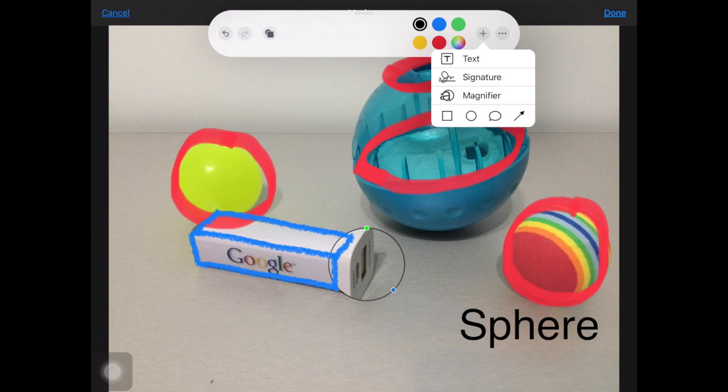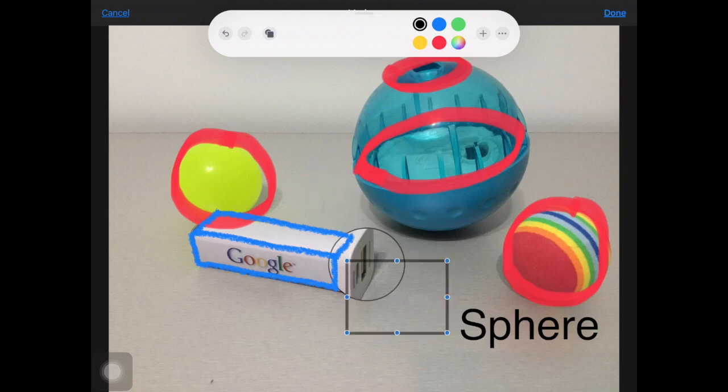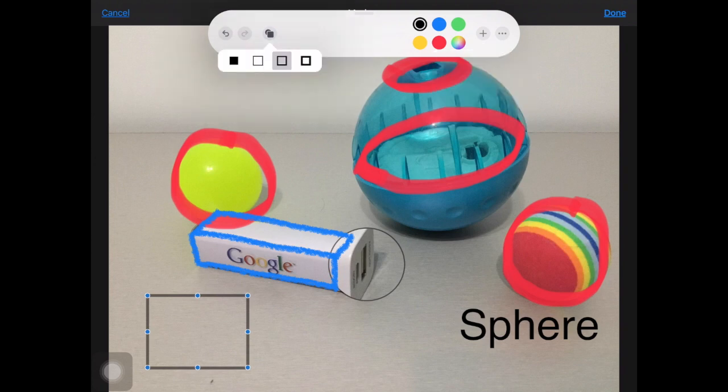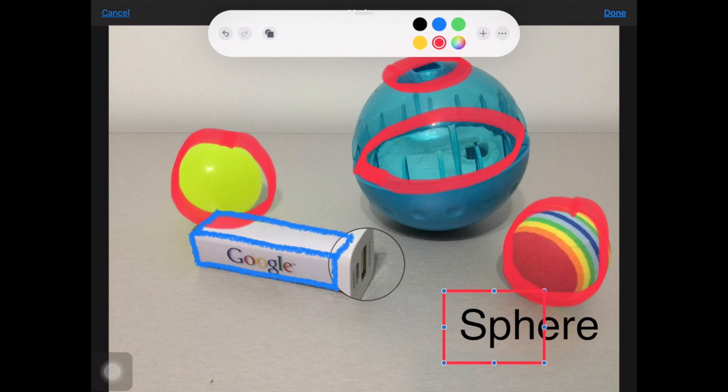Also on the plus you can add shapes so maybe I want to add a rectangle here. And then while that shape is selected I can tap over here on the shapes and I can choose if I want the shape filled or a thin border or a medium border or a really heavy border. And I can also change that color of the border as well. So maybe I want to put this rectangle around that label like that.